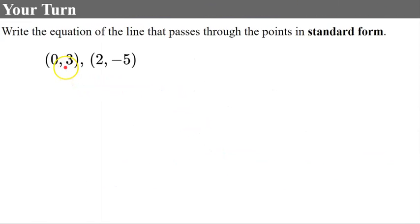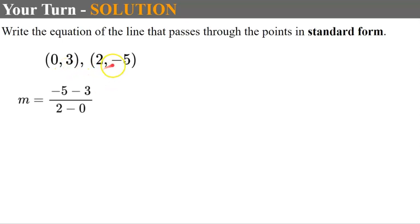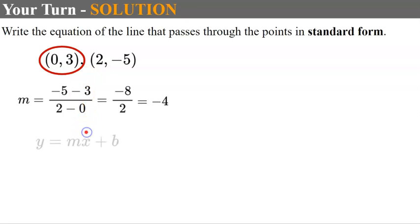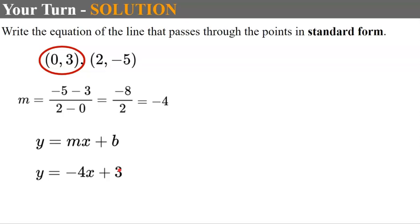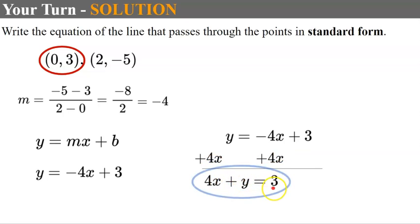Now write the equation of the line that passes through two given points in standard form — pause and come back when done. Welcome back. Find the slope first: negative 5 minus 3 is negative 8; 2 minus 0 is 2; negative 8 over 2 simplifies to negative 4. One point is the y-intercept, so using slope-intercept form: y equals negative 4x plus 3. To put this in standard form, add 4x to each side, giving 4x plus y equals 3.